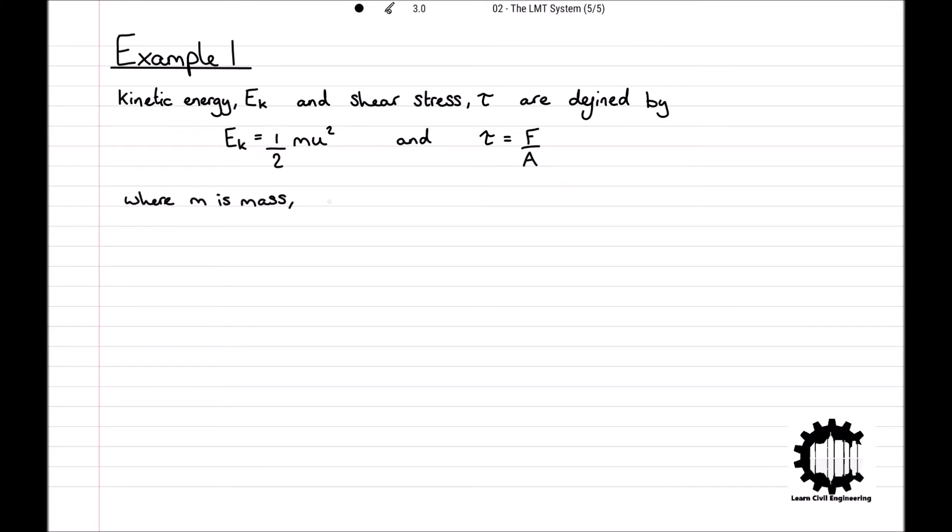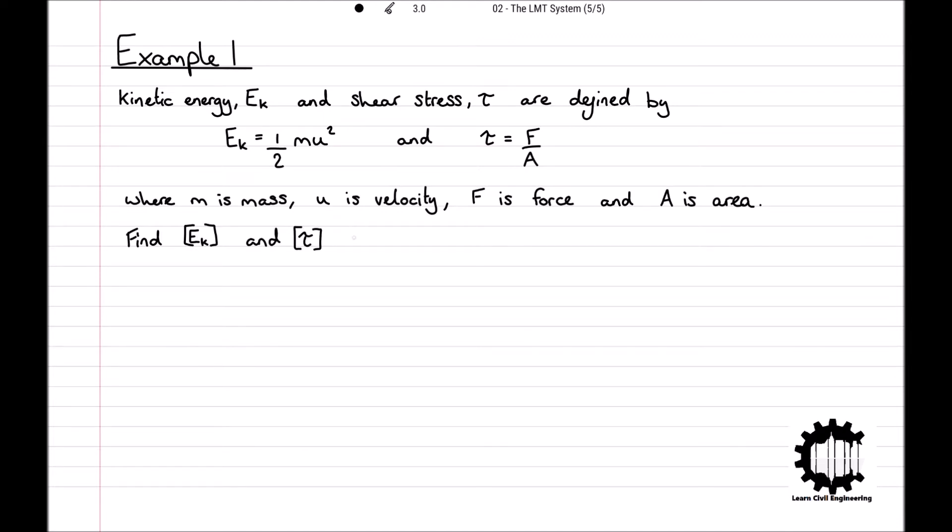Where M is the mass, U is the velocity, F is force, and A is the area. For this example, we have to find the dimensions of EK and the dimensions of tau in terms of the LMT system.